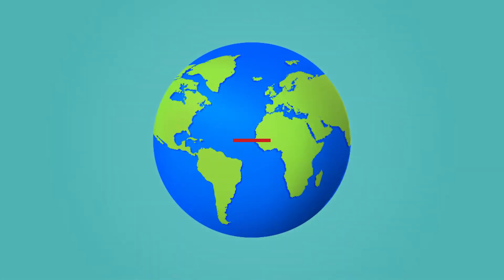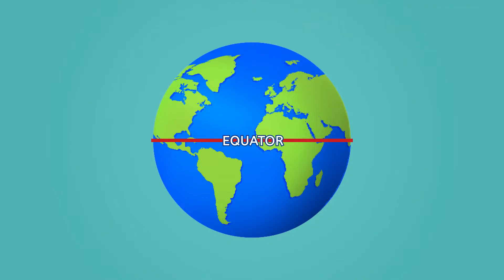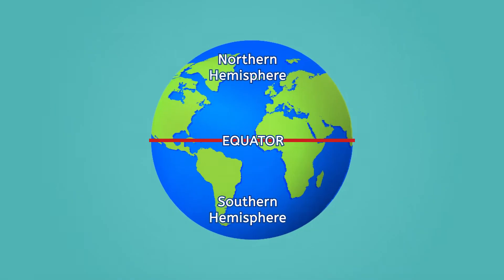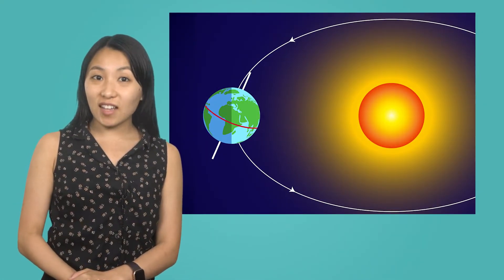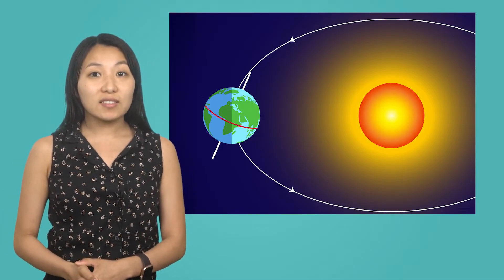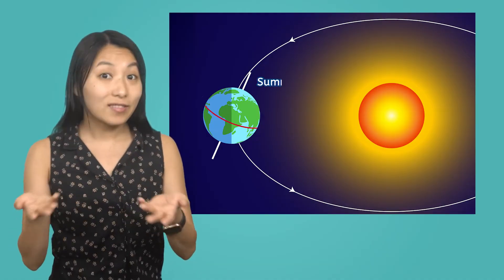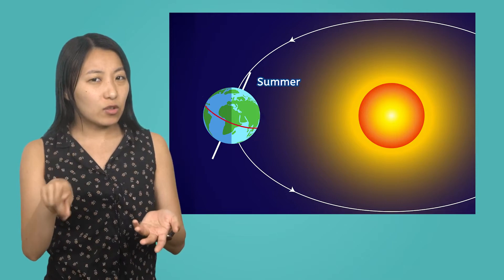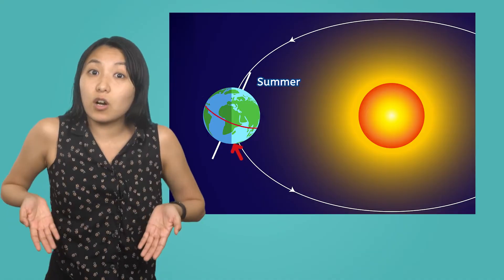Earth is also divided into hemispheres, or halves. An imaginary line called the equator divides the Earth into the northern and southern halves, or the northern and southern hemispheres. The hemisphere tilted toward the Sun receives more direct sunlight, resulting in hotter weather and more hours of daylight. In other words, when the northern hemisphere tilts toward the Sun, it's summer. But if it's summer in the northern hemisphere, then what's going on in the southern hemisphere when it's tilted away?